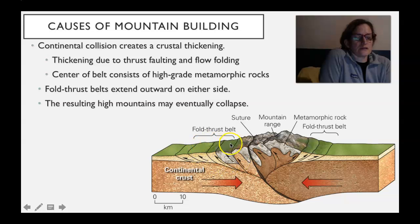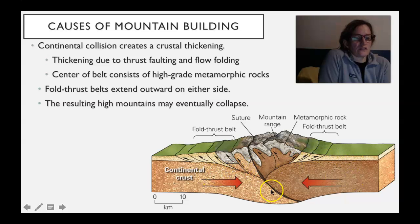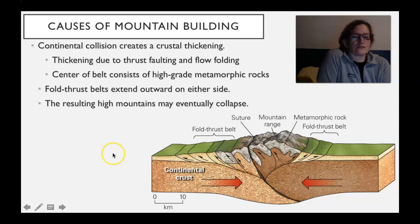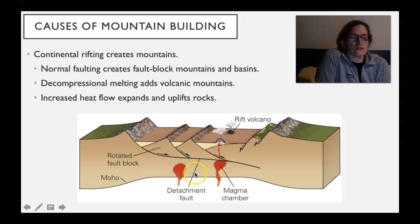Once you've closed the ocean basin, this is what the tectonics looks like: you've got two buoyant pieces of continental crust ramming into each other, and that's why you get these high mountains like the Himalayan mountains and the Appalachian mountains. On either side of the mountains you have the fold and thrust belts — these series of thrust belts — and remember at the base of those is the big detachment fault at the base of all those thrust faults.